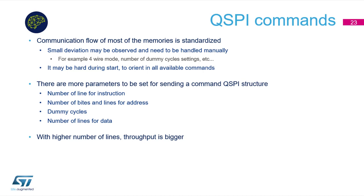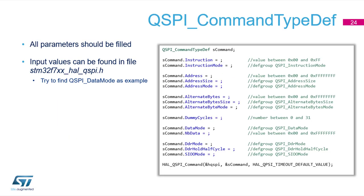For example, for four-wire mode enabling, number of dummy cycles, etc. — there are most parameters to be set. For sending a command in HAL structure, the user has to set the number of lines for instruction, number of bytes and number of lines for address, number of dummy cycles, and number of lines for data.